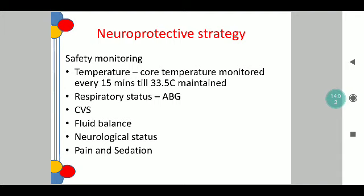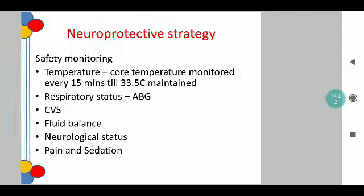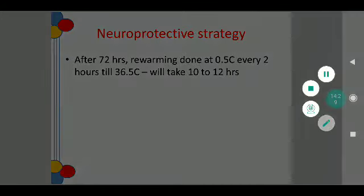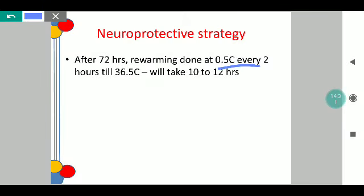Just a few overview points on therapeutic hypothermia: core temperature should be maintained and monitored every 15 minutes until 33.5 degrees centigrade is achieved. Respiratory status is to be checked with an ABG. Cardiovascular balance to be checked along with adequate fluid balance and maintaining neurological status with adequate sedation and pain management. After 72 hours, to re-warm the child, it is done gradually at intervals of 0.5 degrees centigrade every 2 hours until 36.5 degrees centigrade is reached, and this procedure generally takes 10 to 12 hours as a whole.